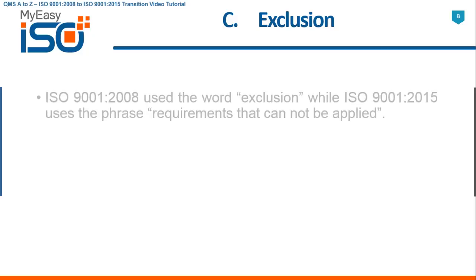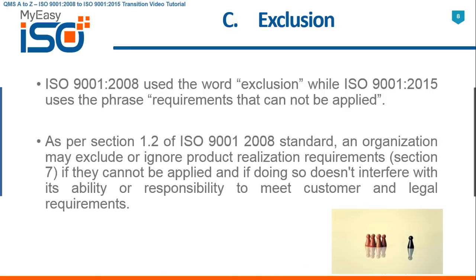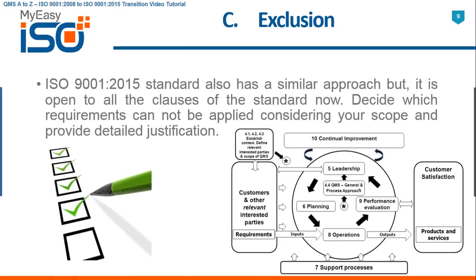C. Exclusion. ISO 9001 2008 used the word exclusion, while ISO 9001 2015 uses the phrase 'requirements that cannot be applied.' As per Section 1.2 of ISO 9001 2008 standard, an organization may exclude or ignore product realization requirements in Section 7 if they cannot be applied and if doing so doesn't interfere with its ability or responsibility to meet customer and legal requirements. ISO 9001 2015 has a similar approach, but instead of restricting this only to one clause, this thinking is applied to all requirements of ISO 9001 2015.